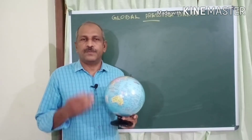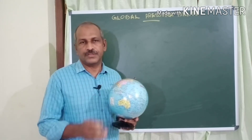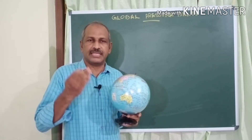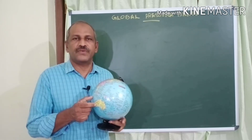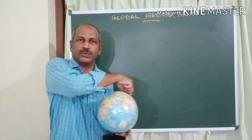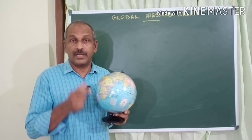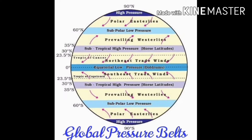We know that atmospheric pressure is not the same everywhere — it varies from place to place. But studies have revealed that the same atmospheric pressure is experienced between certain latitudes. Based on this, the Earth's surface is divided into a number of pressure belts, called Global Pressure Belts. You can see the illustration, where seven Global Pressure Belts are shown with their names and respective latitudes.